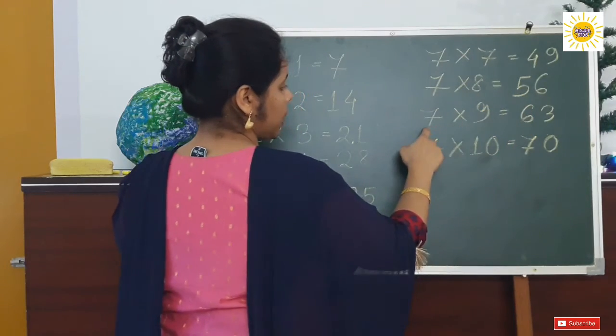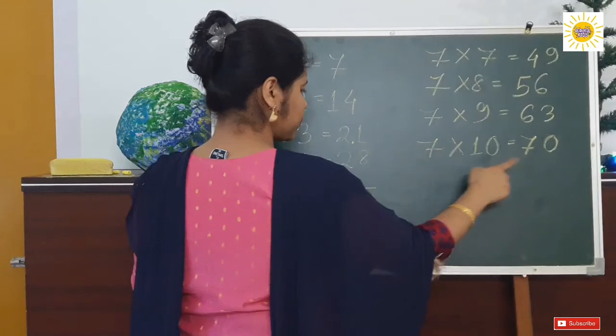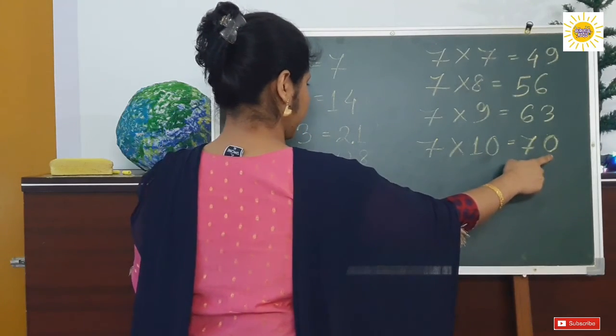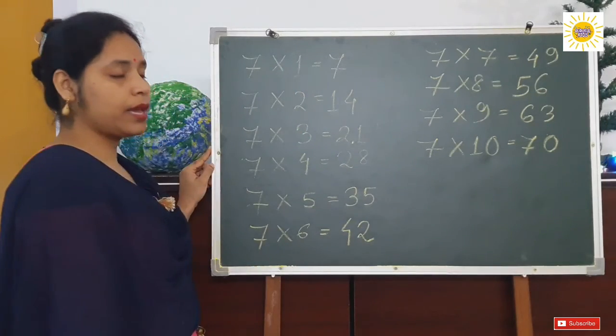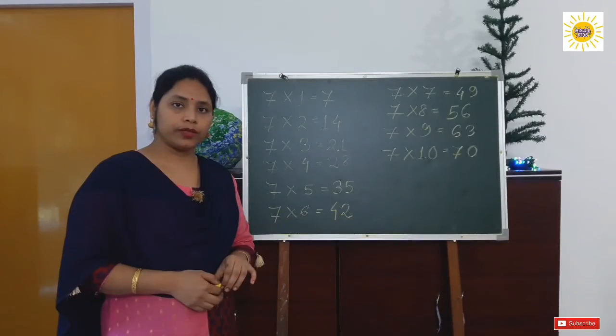7 eights are 56. 7 nines are 63, and 7 tens are 70. Okay, practice at home and recite. Thank you.